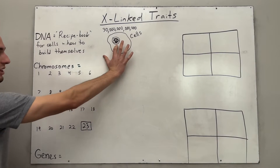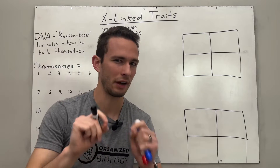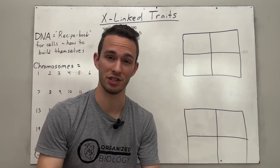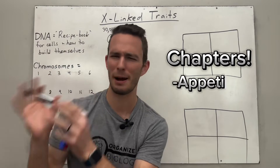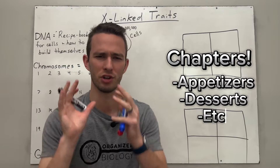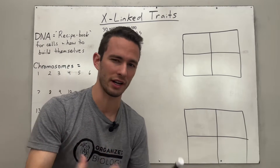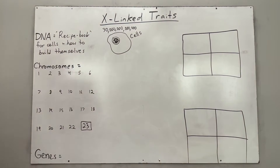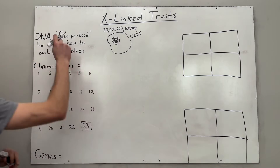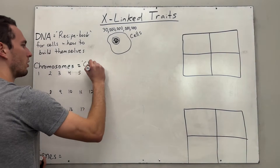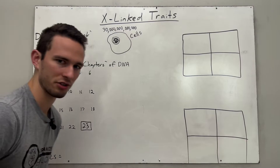If all of your cells have these instructions, they know how to build themselves. Recipe books are very well organized — usually organized into chapters, maybe a chapter for appetizers, a chapter for desserts, and so on. Your DNA is also organized into chapter books, which are chromosomes. Think of these as the chapters of the recipe book. And you have 23 pairs of chapters.